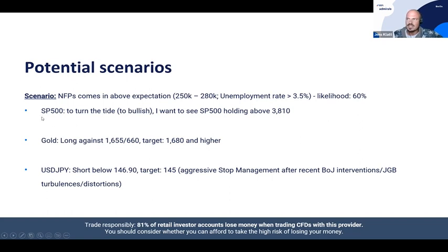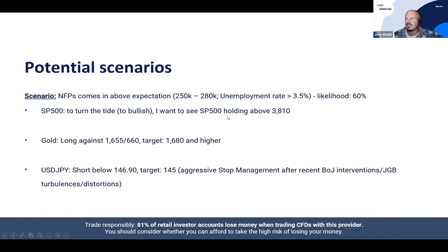In this case I write: to turn the tide to bullish, after what we saw following the Fed, I want to see S&P 500 holding above 3,810. If this happens — if we're probably closing the week above that level — then I'm willing to play the S&P 500 from the long side. Given that, we have still some room to go, even though the reaction is very similar.